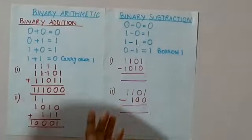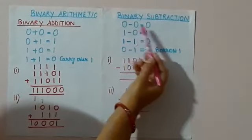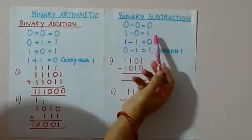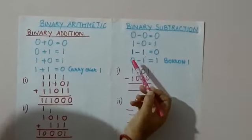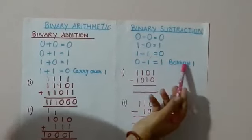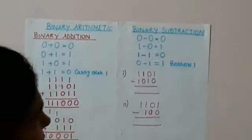The rules for binary subtraction are: 0 minus 0 is 0, 1 minus 0 is 1, 1 minus 1 is 0, and 0 minus 1 is 1 but it borrows 1 from the next number. Clear.